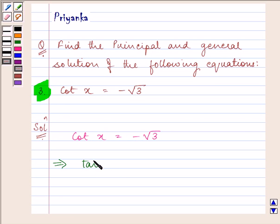To simplify, that will be 1 divided by cot x, and hence the value will be minus 1 by root 3.